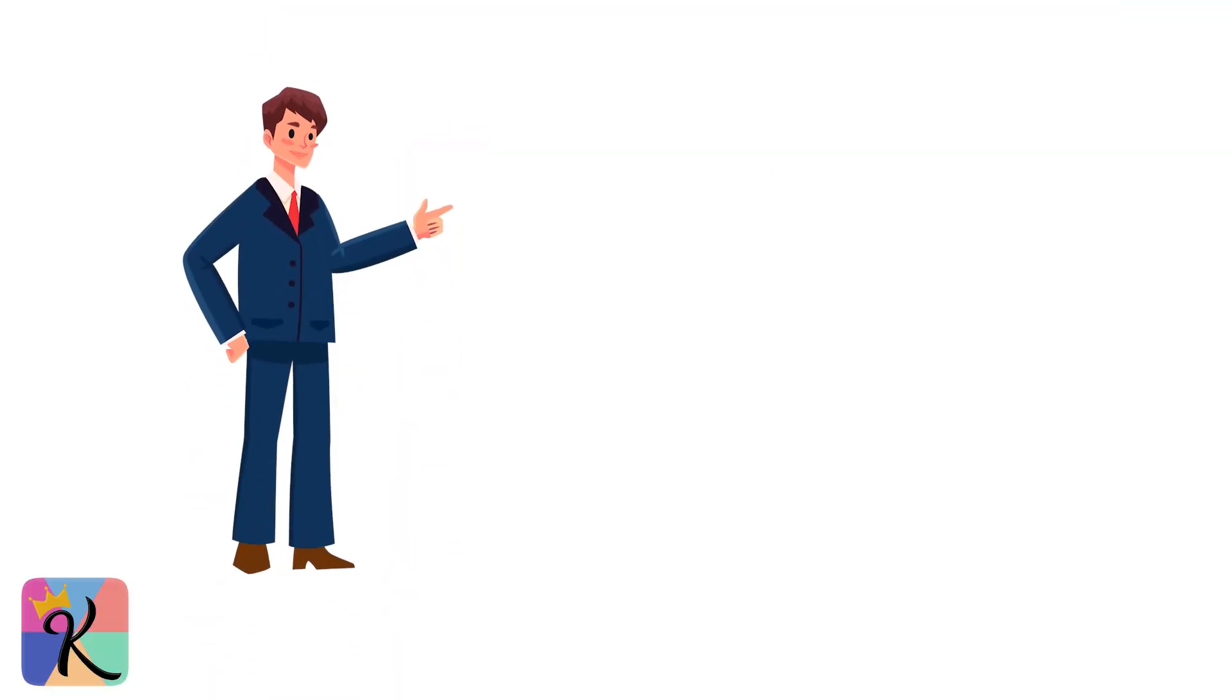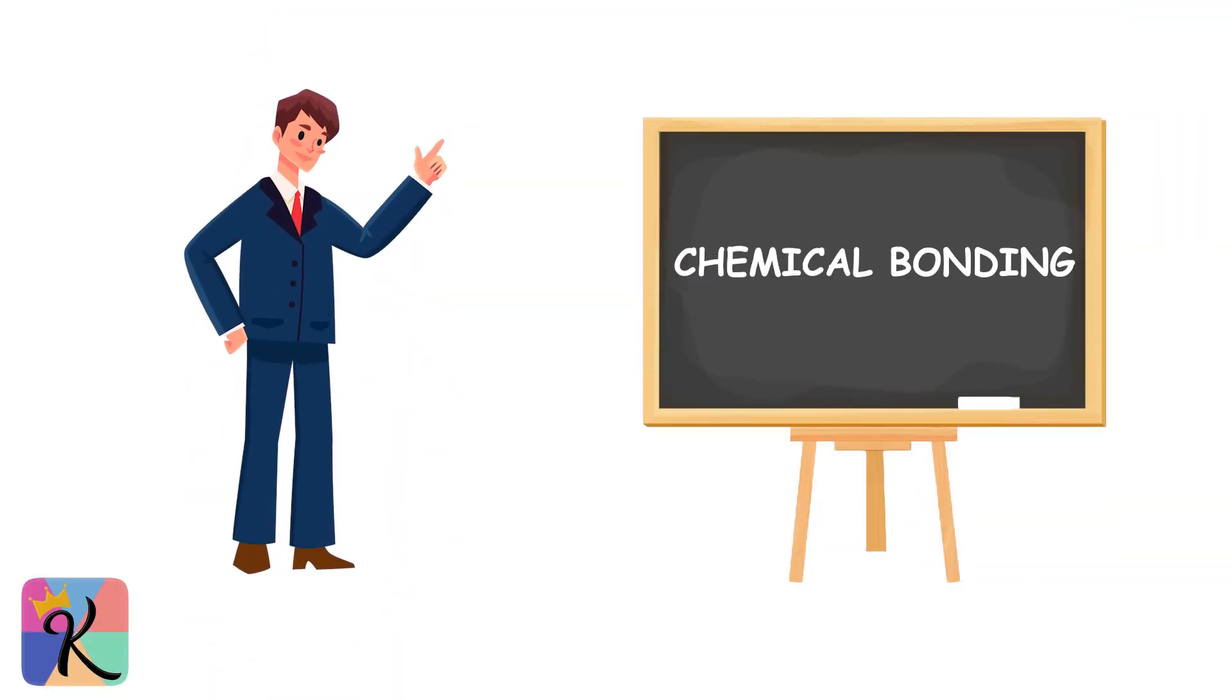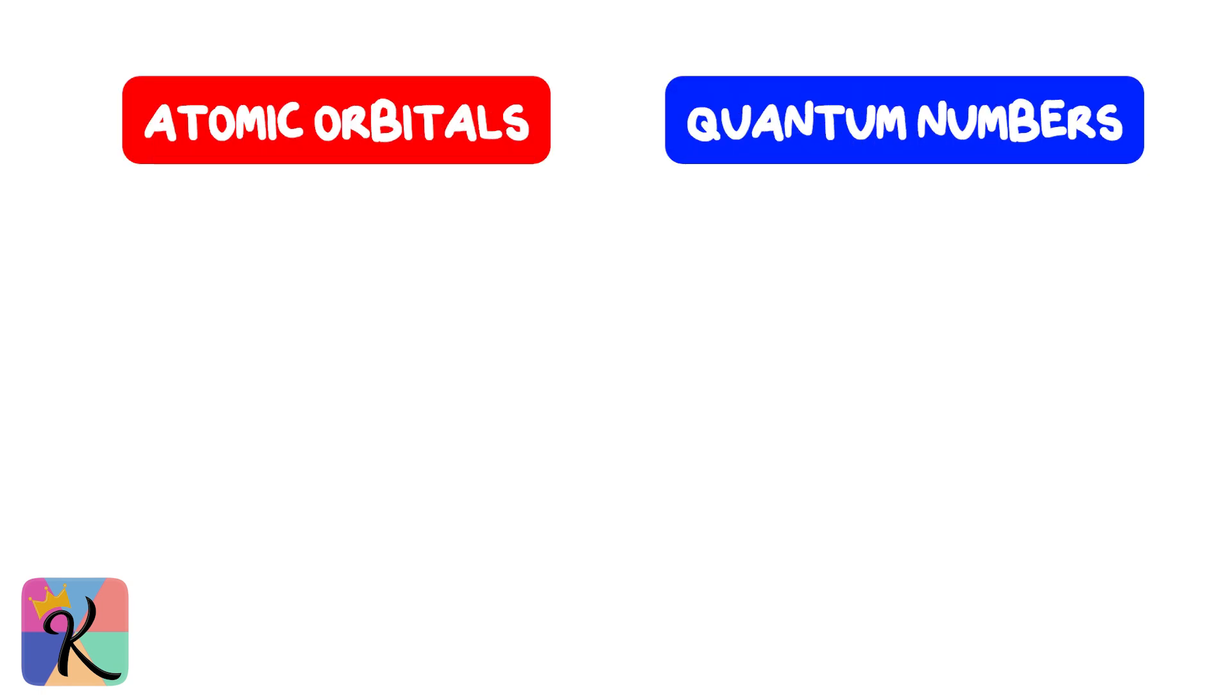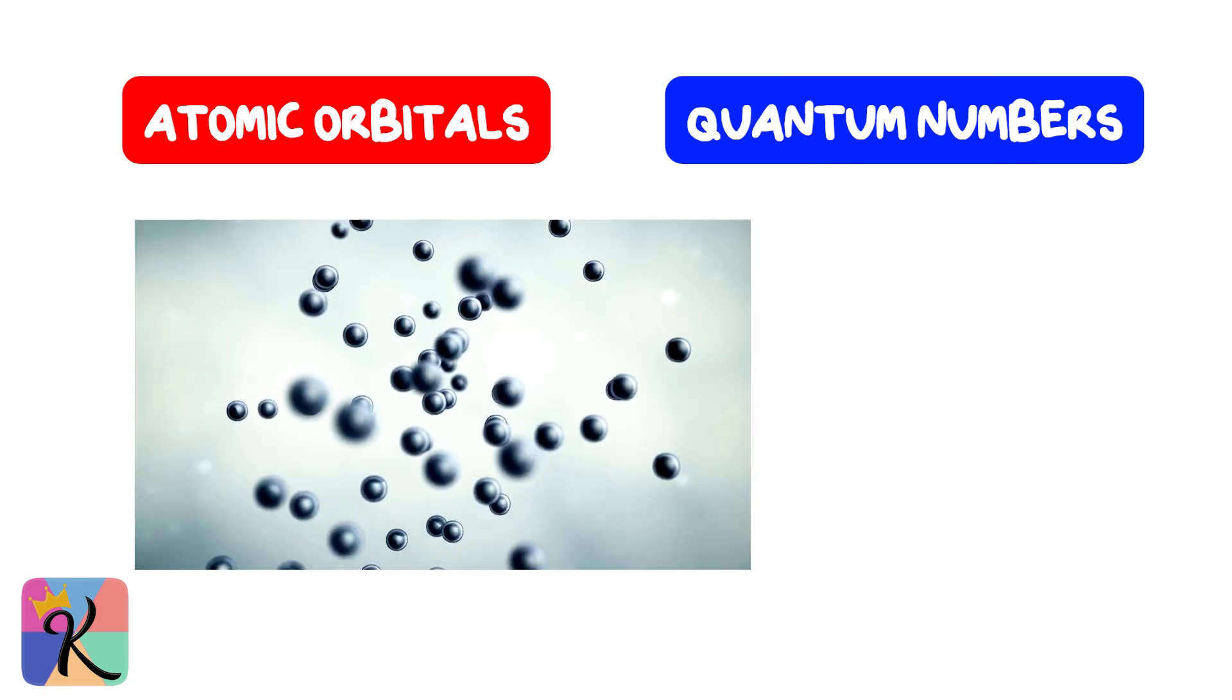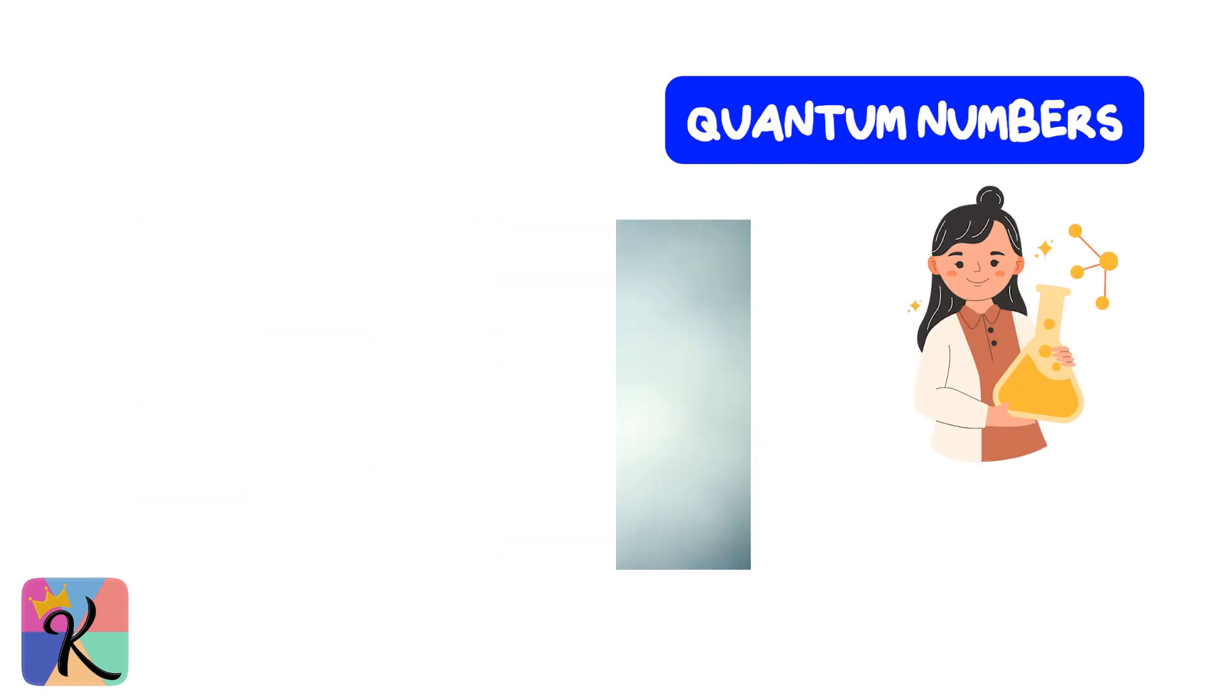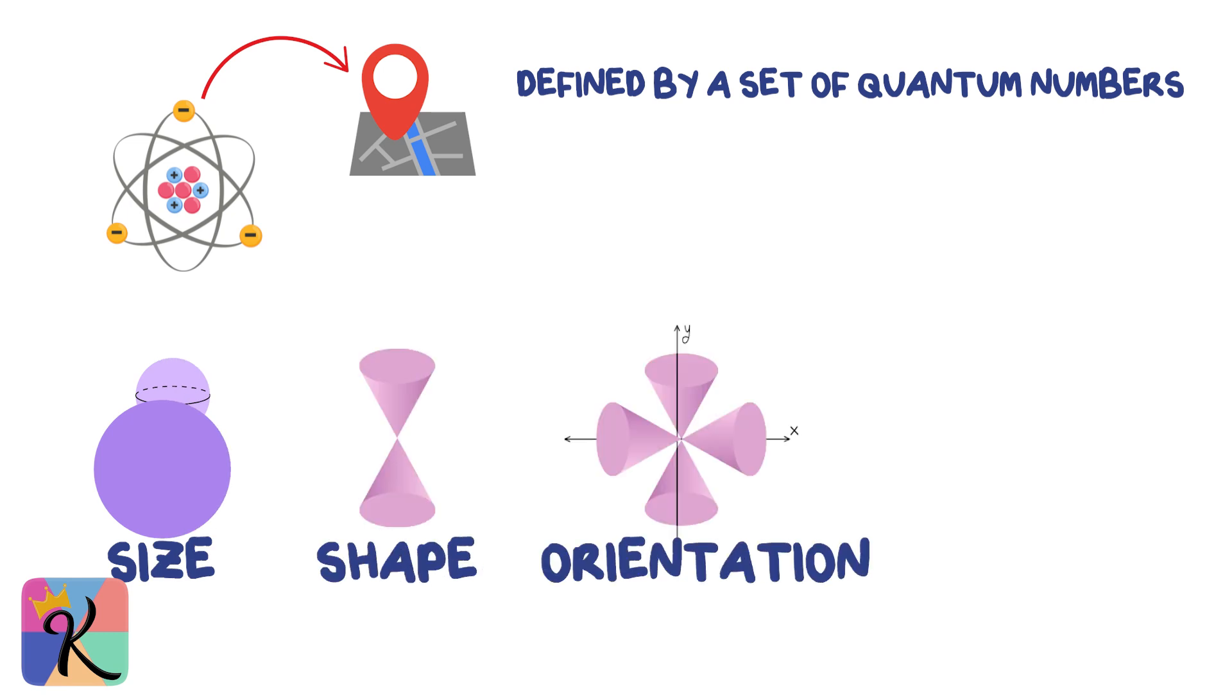Alright, so in today's video, we're diving into a key topic in understanding chemical bonding, atomic orbitals, and quantum numbers. These concepts form the foundation of how atoms bond and interact in chemistry. Each electron has a specific address within an atom defined by a set of quantum numbers. These numbers describe the size, shape, and orientation of atomic orbitals, and understanding this will help you grasp bonding in organic chemistry and beyond. Let's jump in.